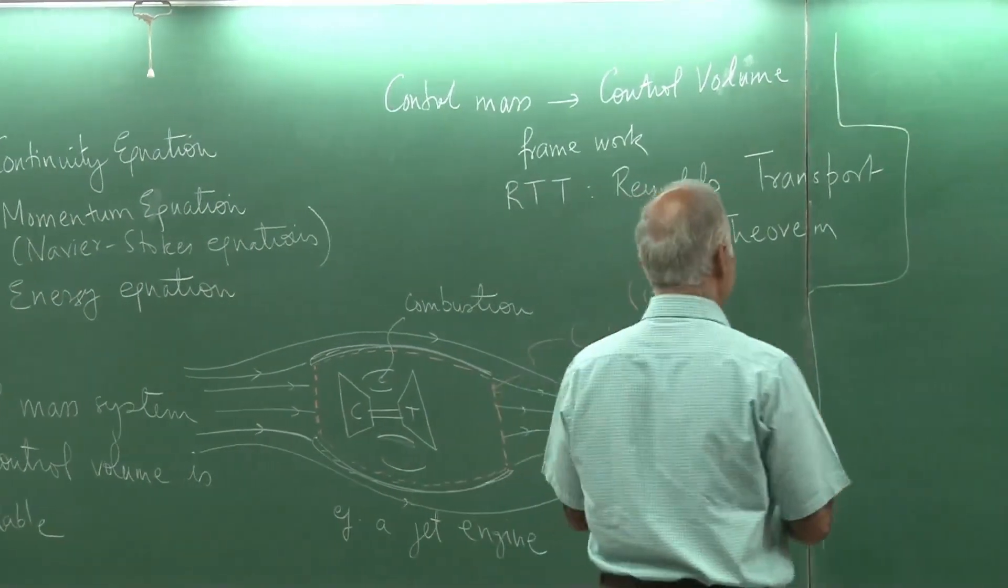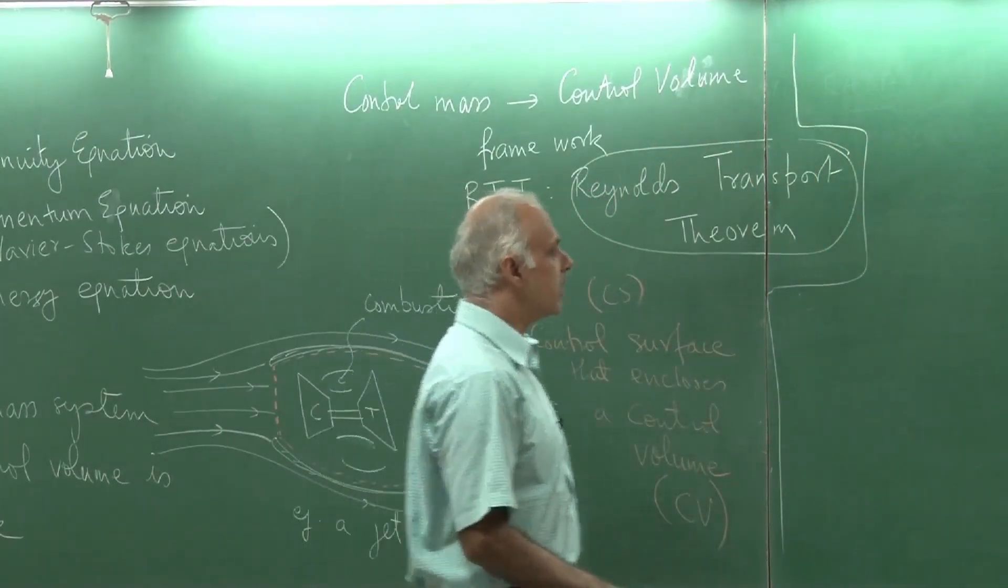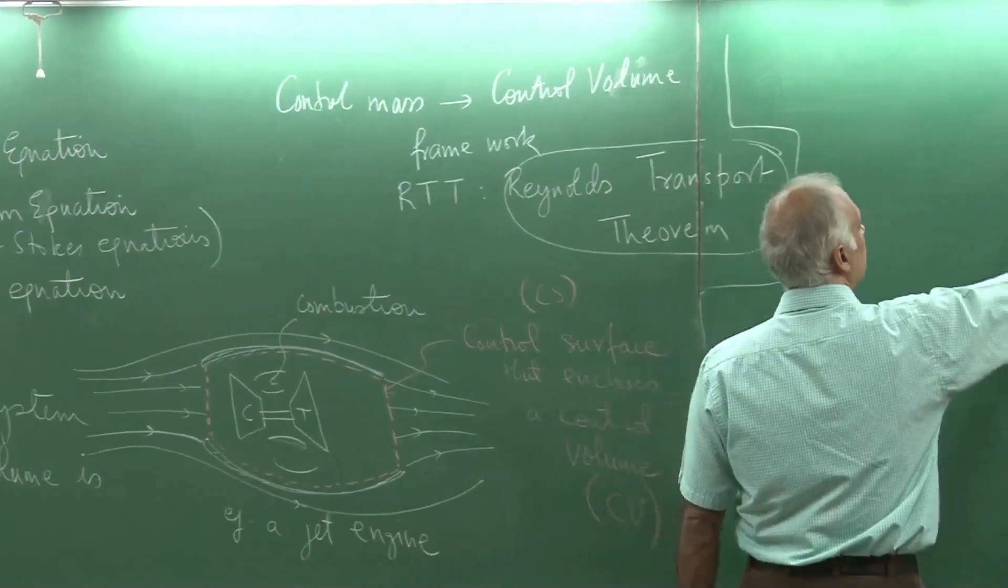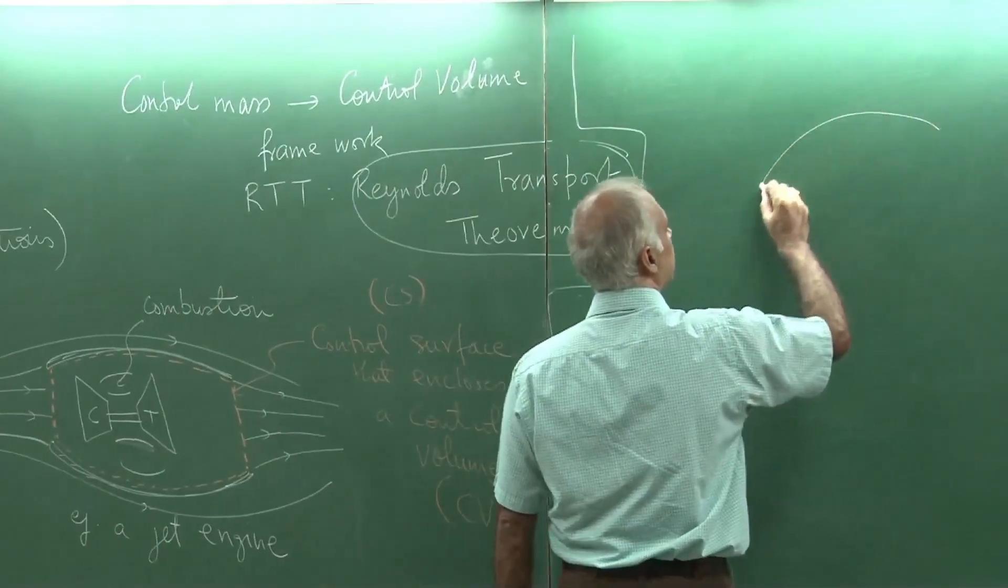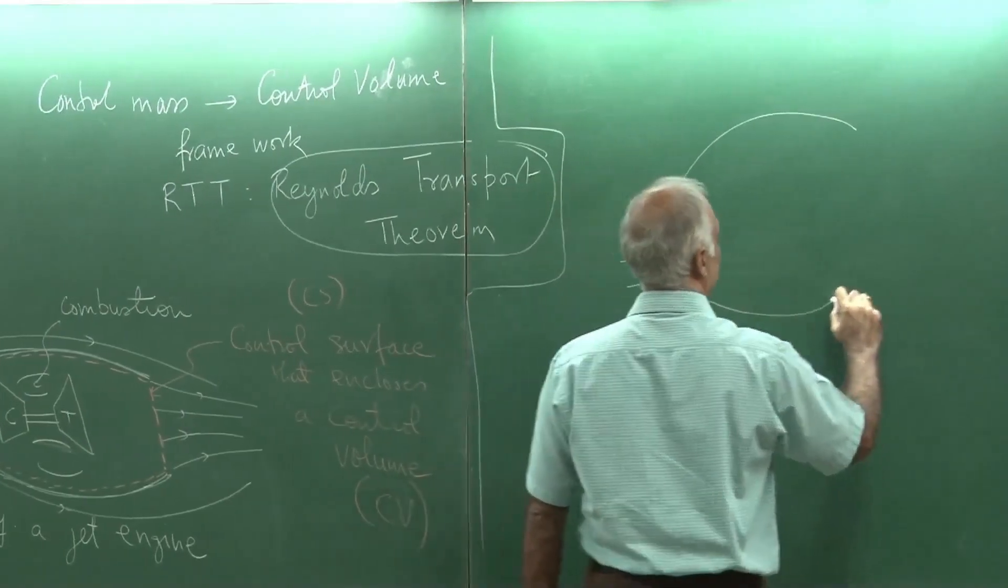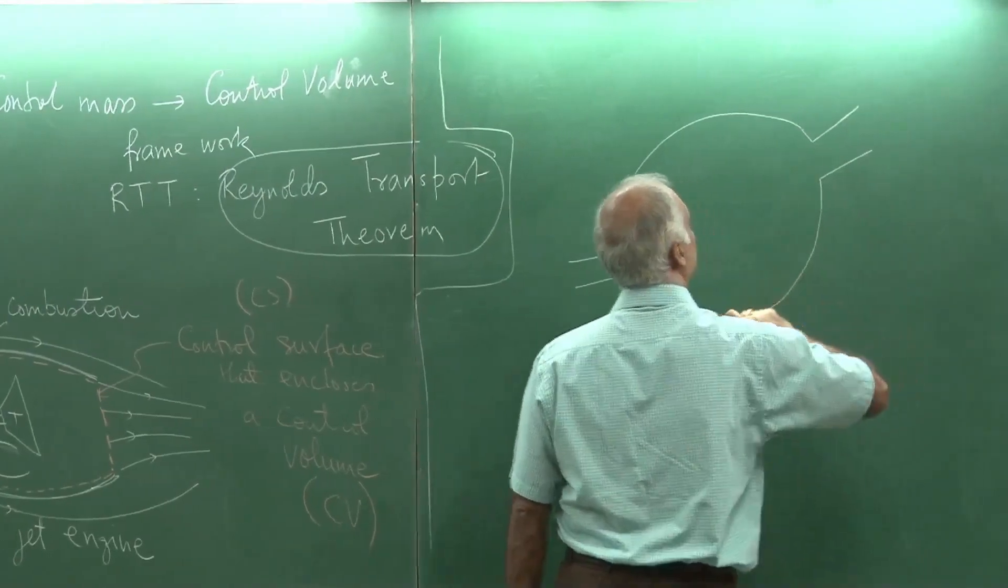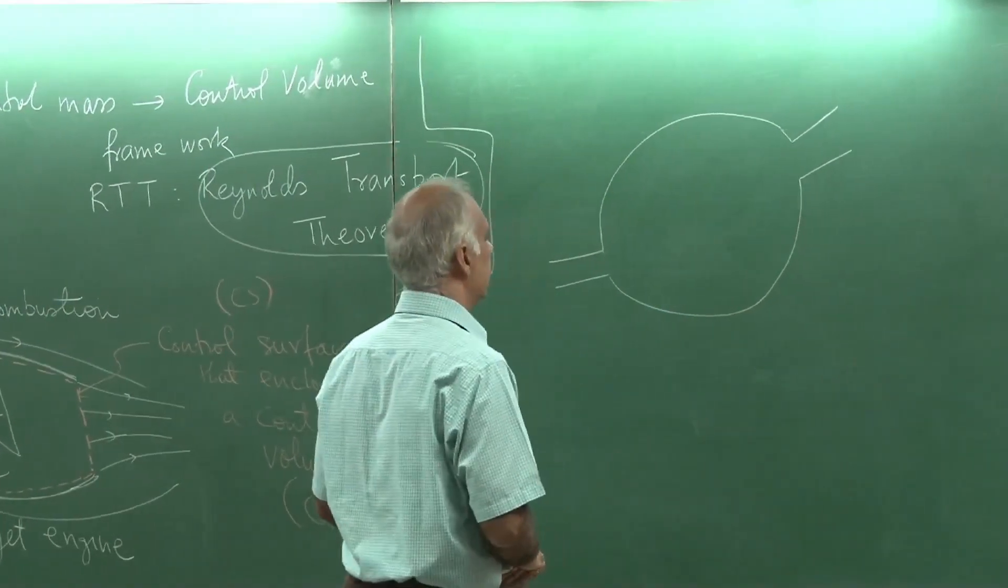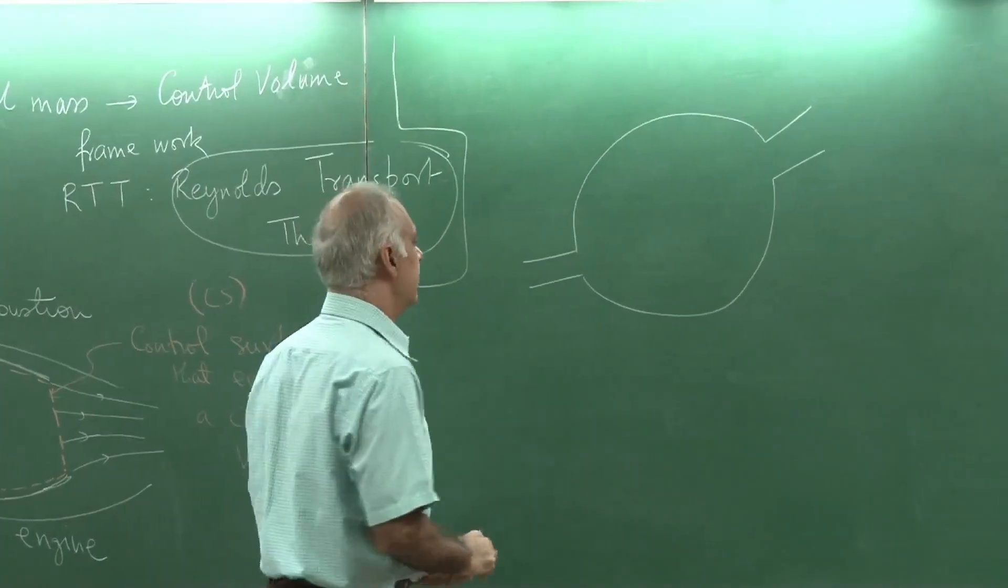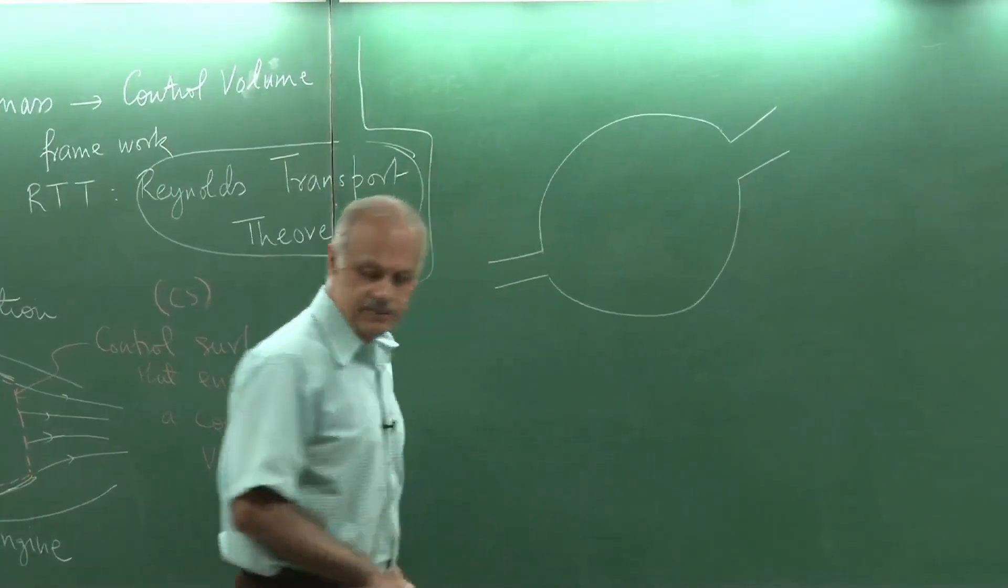To illustrate the idea of the Reynolds transport theorem, what I would do is, let me consider a body, this is a hypothetical body which has, this is a control volume that I am considering.